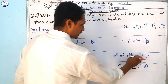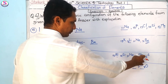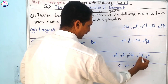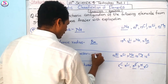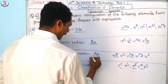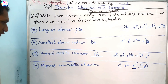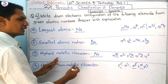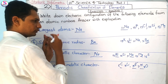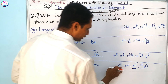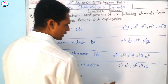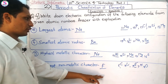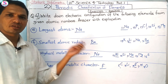For highest metallic character among the third-row elements: the metals are aluminum, sodium, and magnesium. Metallic character decreases from left to right, so sodium has the highest metallic character. For highest non-metallic character: non-metallic character increases from left to right, so fluorine has the most non-metallic character.